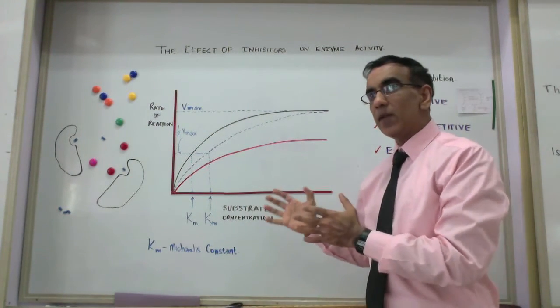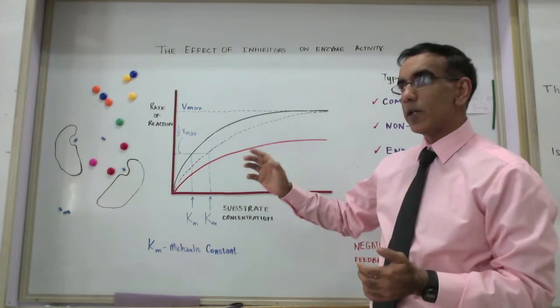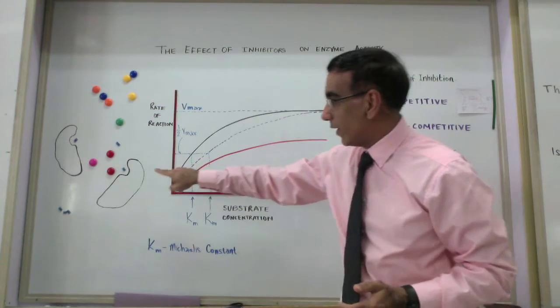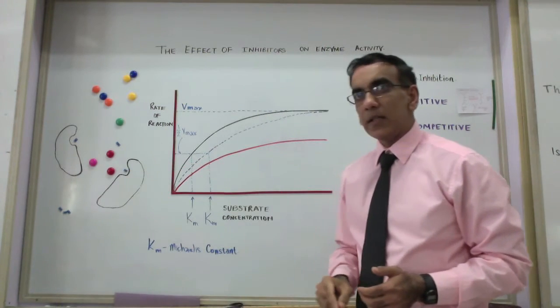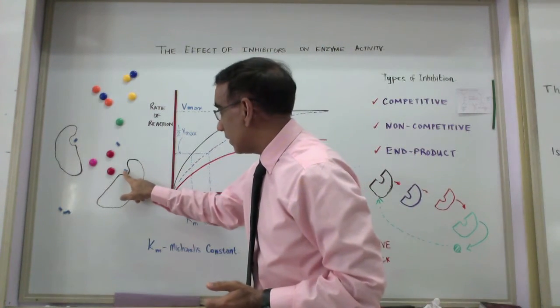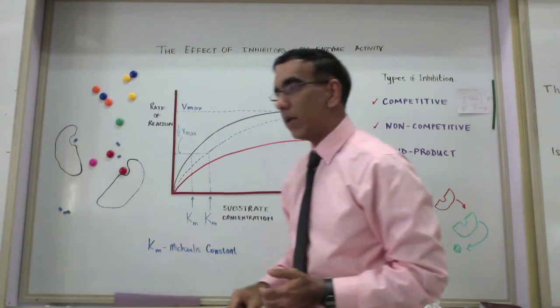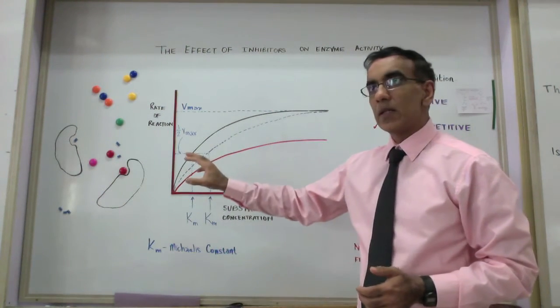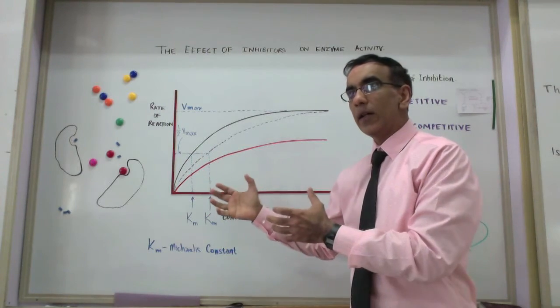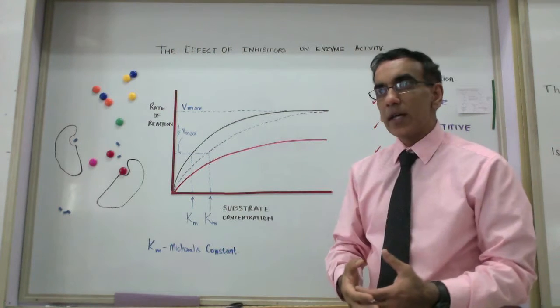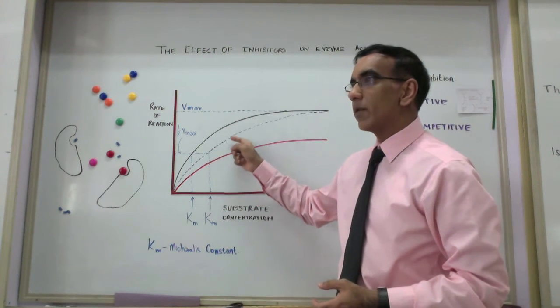And if you have competitive inhibitors around in the enzyme-substrate mix, then there is also a probability of them fitting into the active site, and there is also a probability that they would bump out of the active site, and then allow the substrate to come in. But their very presence slows down the likelihood of an enzyme-substrate complex being formed. And in slowing this down, they slow down the rate of the reaction.